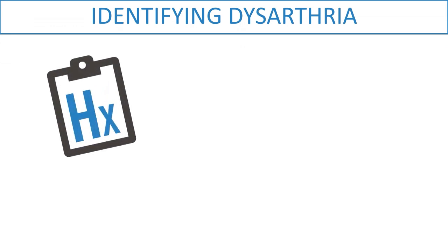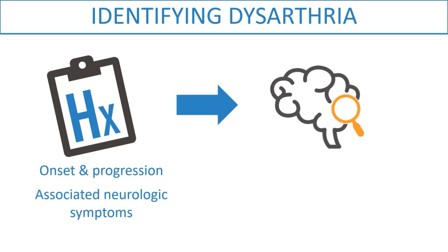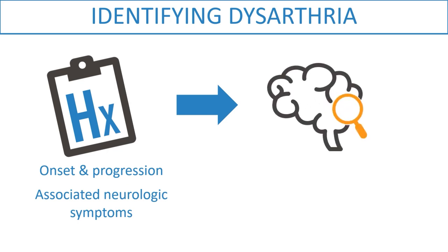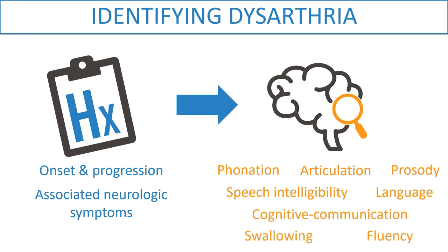The approach to identifying the type of dysarthria involves collecting a detailed history highlighting the onset and progression of dysarthria and associated neurological symptoms. The neurological exam can be used to help localize the source of the dysarthria, and a complete evaluation includes assessment of phonation, articulation, prosody, speech intelligibility, language, cognitive communication, swallowing, and fluency.